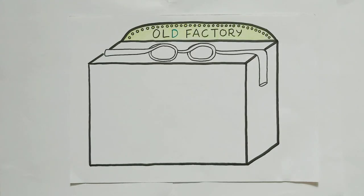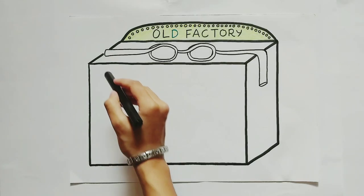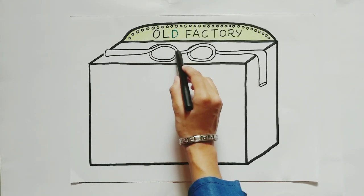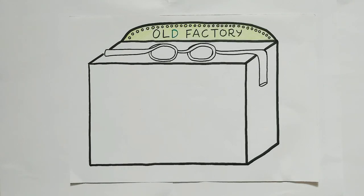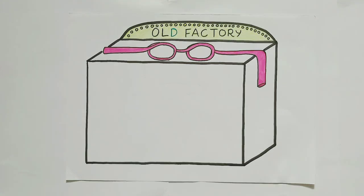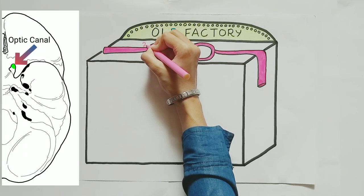Now this is an old factory that produces spectacles, a type of optical aid. I'm gonna draw a pipe or a canal forming these eyeglasses and then extending it down from the side. We'll come back to this later. So this is the second cranial nerve, optic nerve, which leaves the orbit via the optic canal.